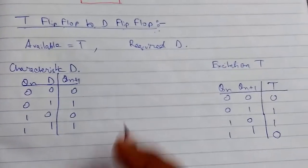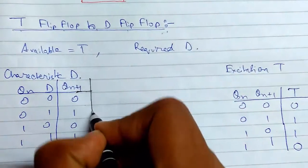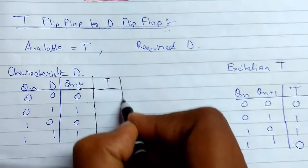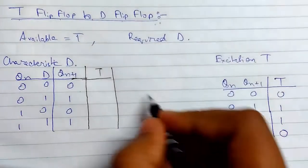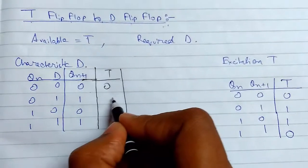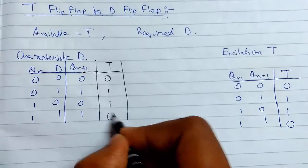So now what we need to do is we need to find the values of T. So let us see how it is done. So 0, 0, T is 0. 0, 1, T is 1. This will be 1 again. This will be 0.